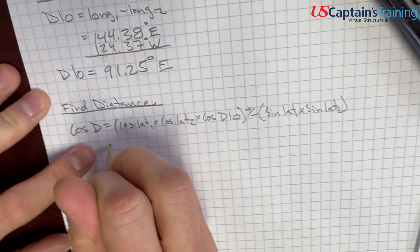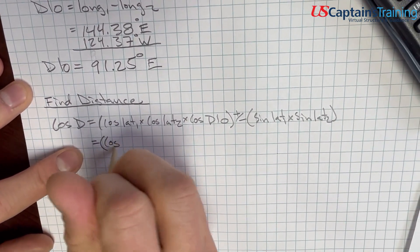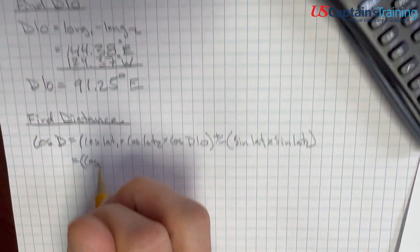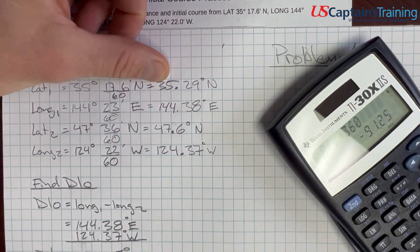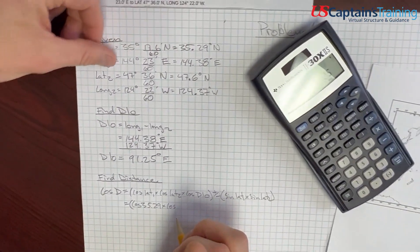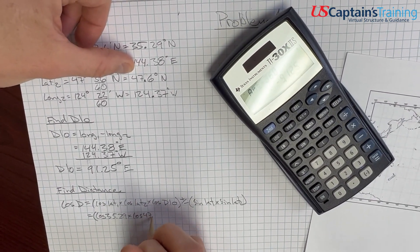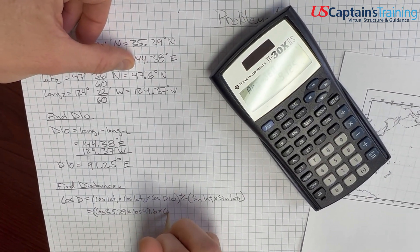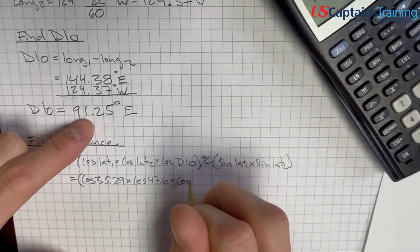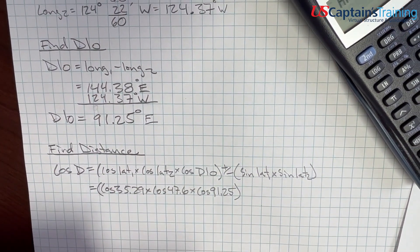I know that's a lot, but it's just a bunch of calculator stuff. So, if we start plugging these in, so, cosine distance equals, we start plugging these in, cosine lat 1 is 35.29 times the cosine of lat 2, which is 47.6, times the cosine of D low, which we found, 91.25.